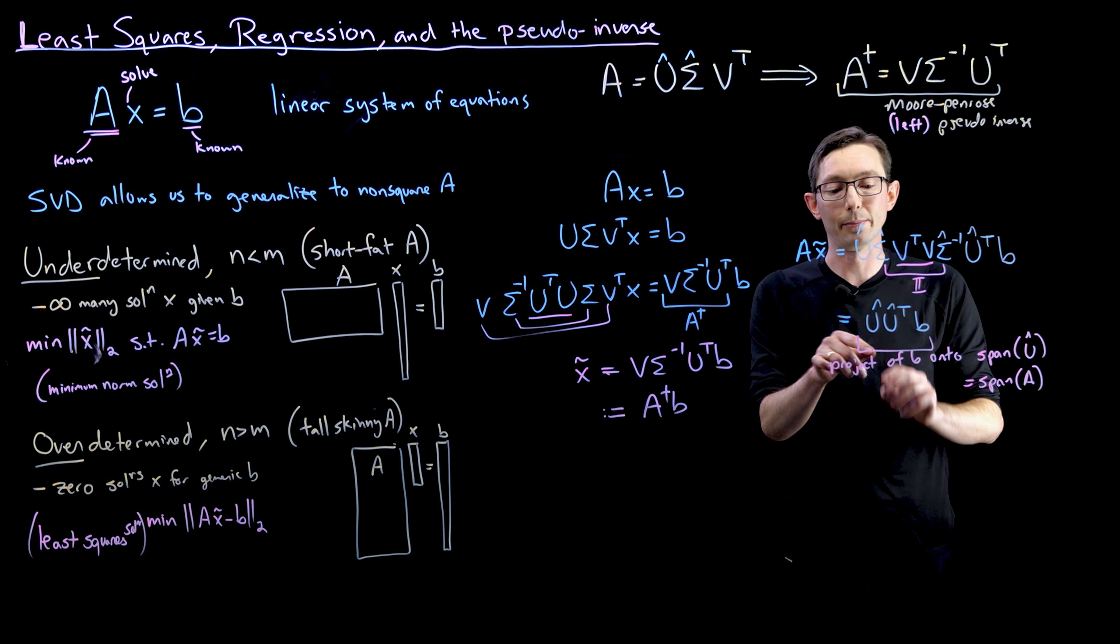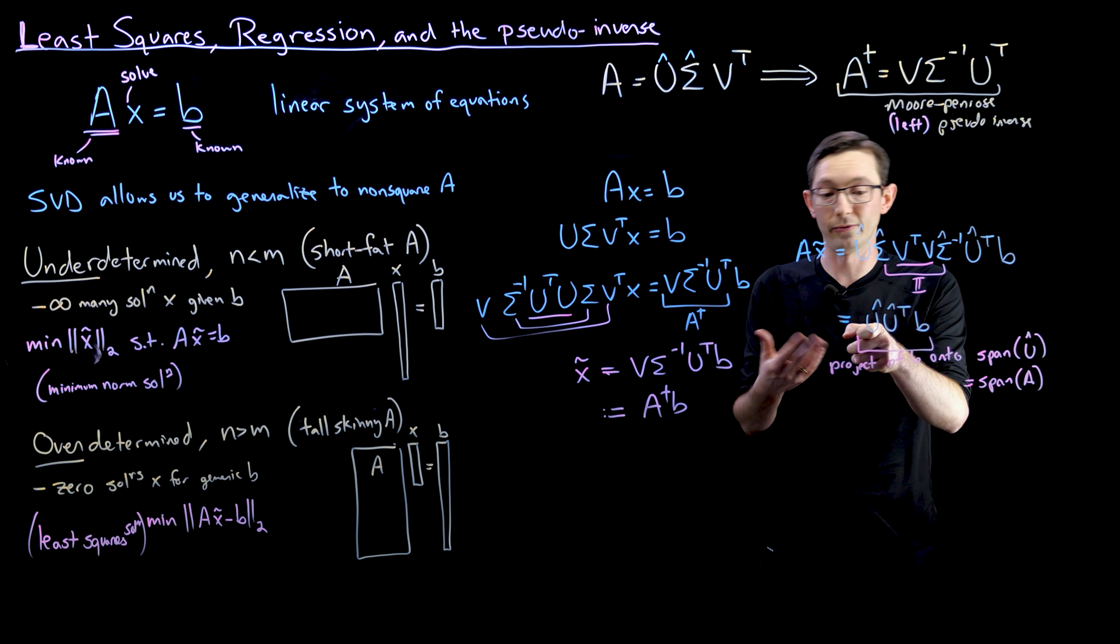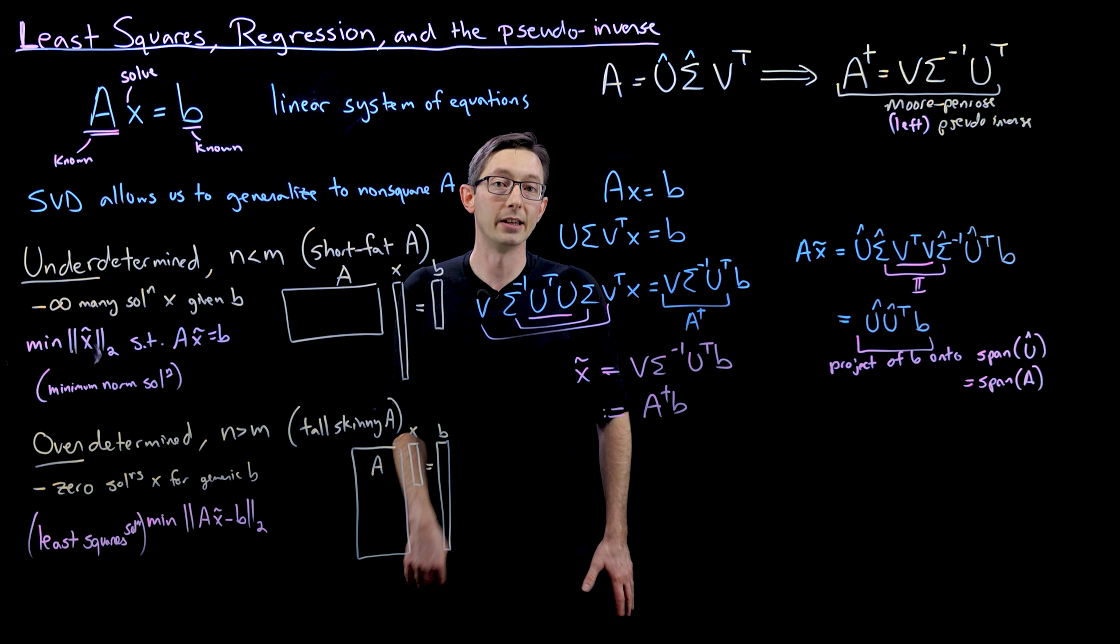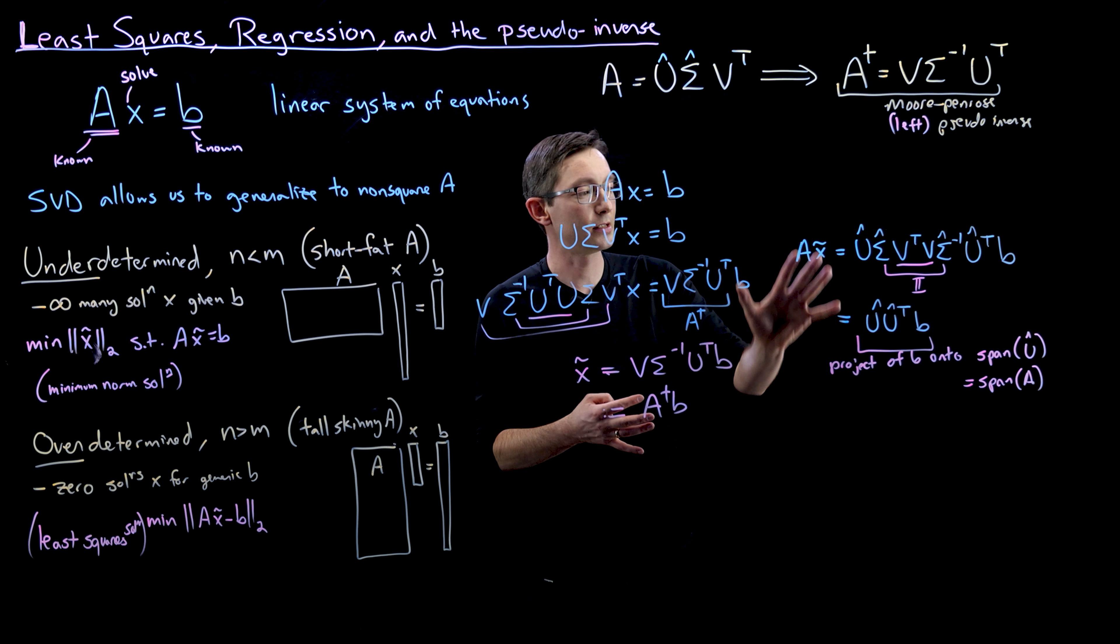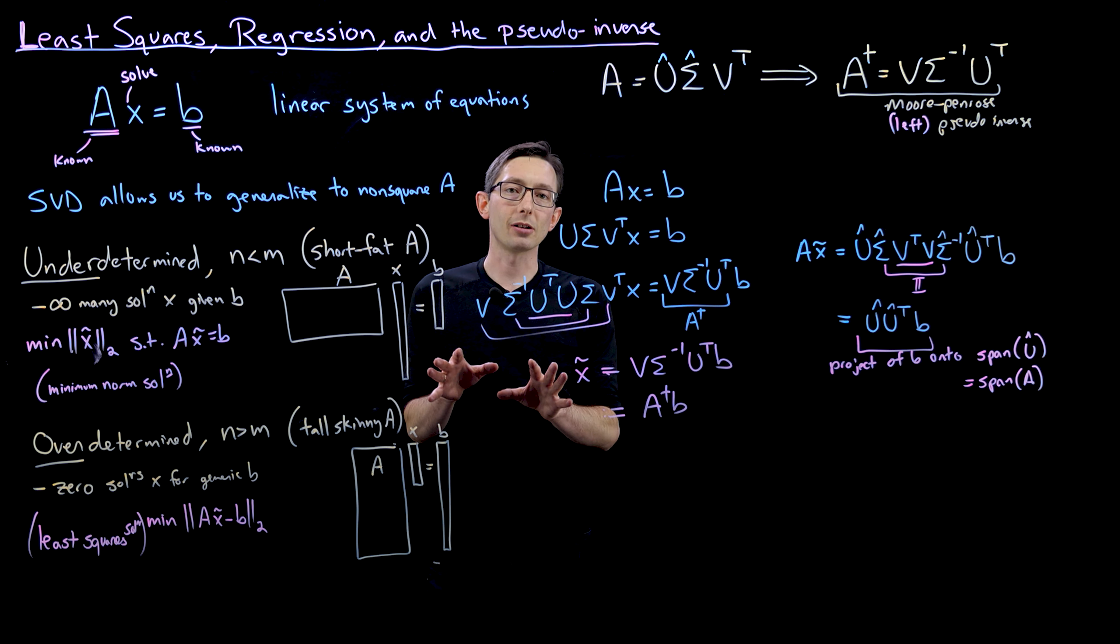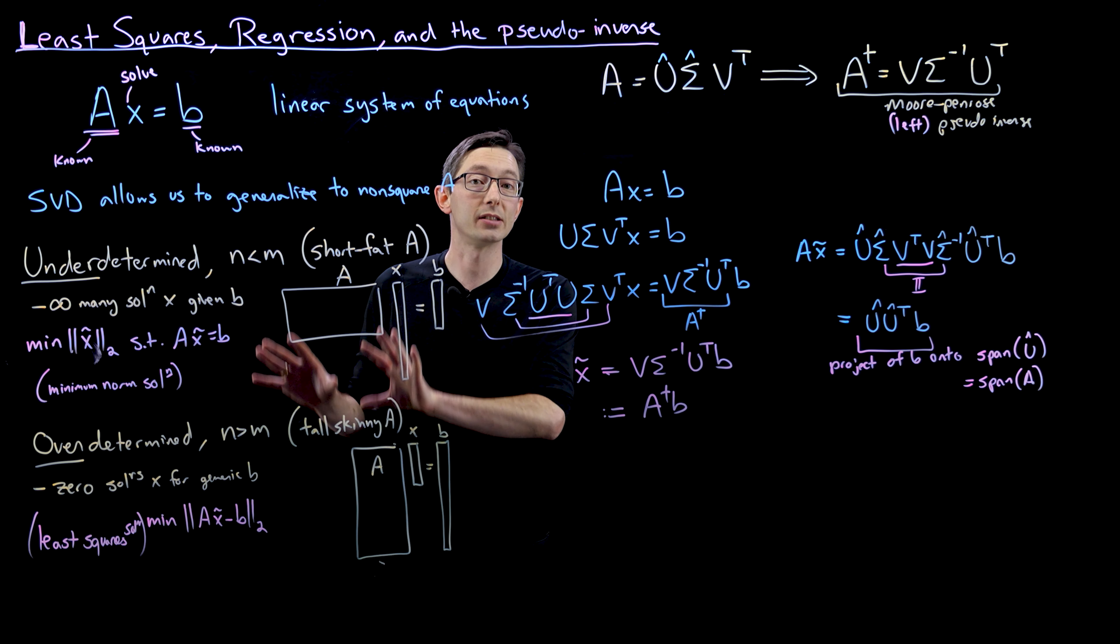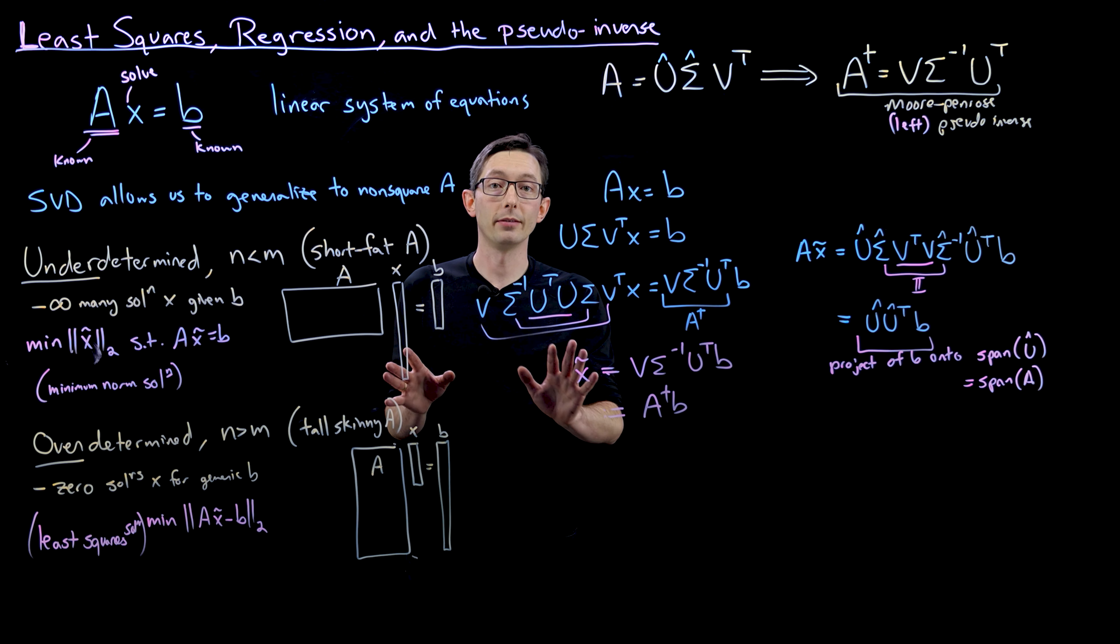So all of the error crops up because this is an orthogonal projection of B onto the columns of U, my singular vectors, which are also the same as spanning the columns of A of the data matrix. So I think that's a pretty interesting interpretation of this pseudo-inverse and understanding how error crops up. In the next lecture, I'm going to show you a little bit more mathematically exactly what the conditions are where these matrices do and do not have solutions. All right, thank you.